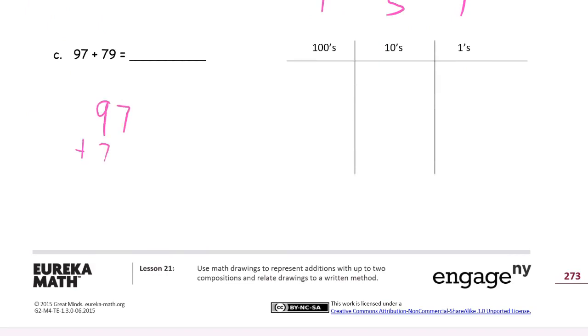97 plus 79. 9 plus 7. We're going to have to add 9 plus 7 twice here. So get a little practice at that. That's 16. A ten and a six. 6 ones and one ten. And then we'll add 16 and one more. That's 17. 17 tens is 7 tens and a hundred. There's a hundred seventy-six.